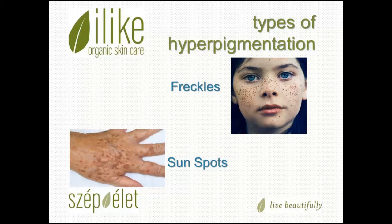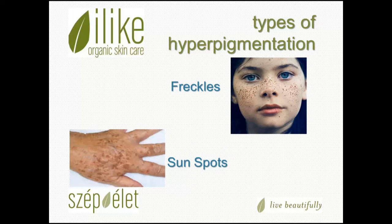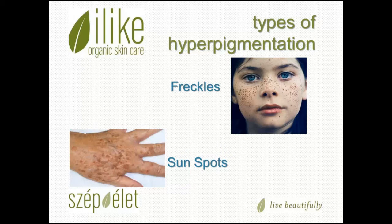Sunspots — also called liver spots and age spots — are dark spots induced by sun exposure, also called photo damage. They're usually flat discrete spots on the cheeks, nose, and forehead, and are also very common on the backs of hands, the arms, and the décolleté. These will not fade as sun exposure is limited. The medical term for these is solar lentigines.